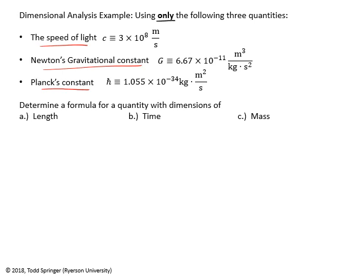This is an exercise in working with units, but it's also a very interesting problem. A meter is just something that humans made up — someone just created this measurement called a meter. On the other hand, the speed of light is a physical constant of nature. G is something physical about the universe, and Planck's constant — these are all fundamental constants of nature. If you can combine them to make length, time, and mass, you have what I would call nature's units, or natural units. These are sometimes called Planck units.